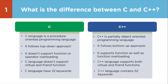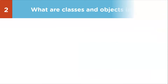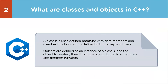Next question: what are classes and objects in C++? A class is a user-defined data type that contains data members and member functions, defined with the keyword class. Objects are defined as an instance of a class. Once an object is created, it can operate on both data members and member functions.